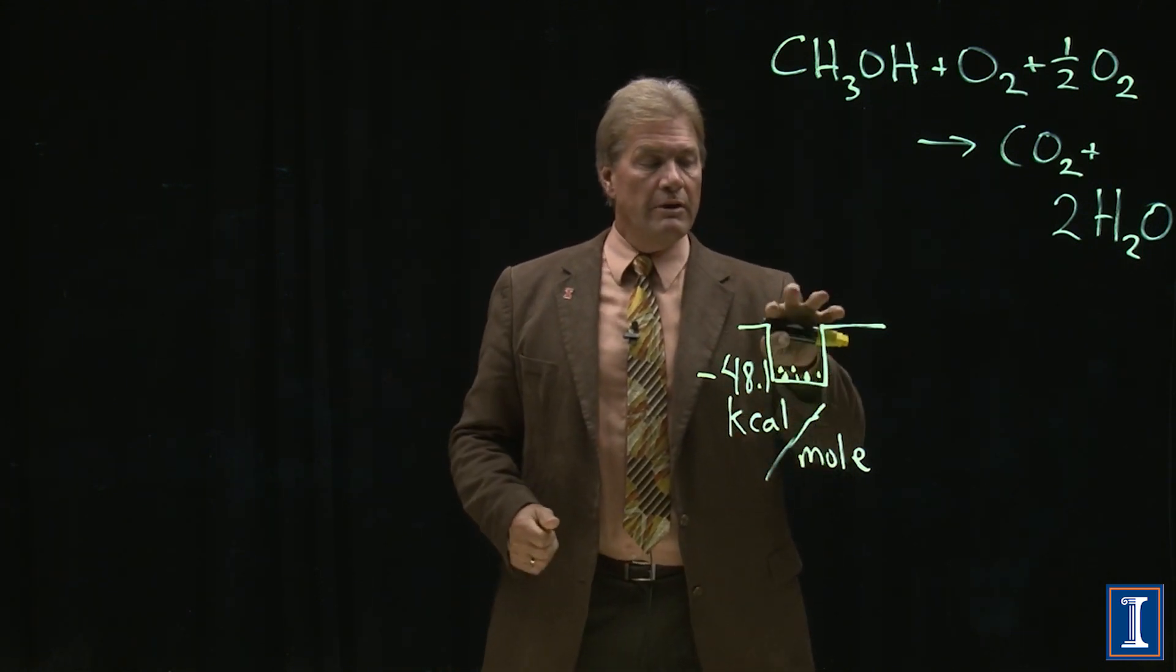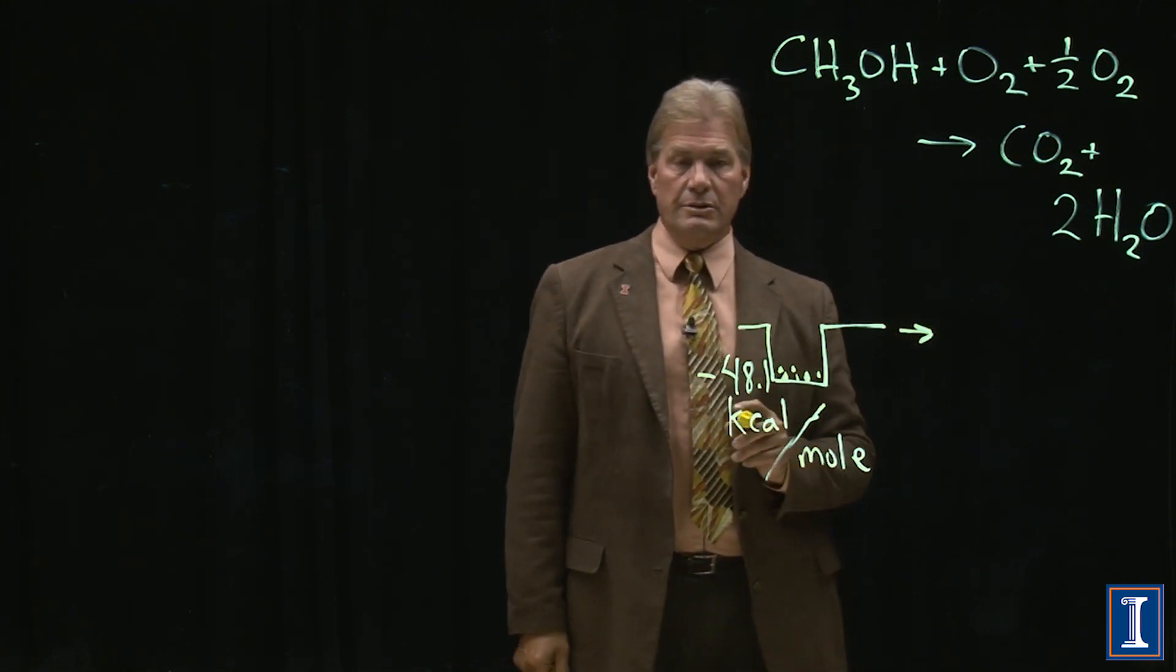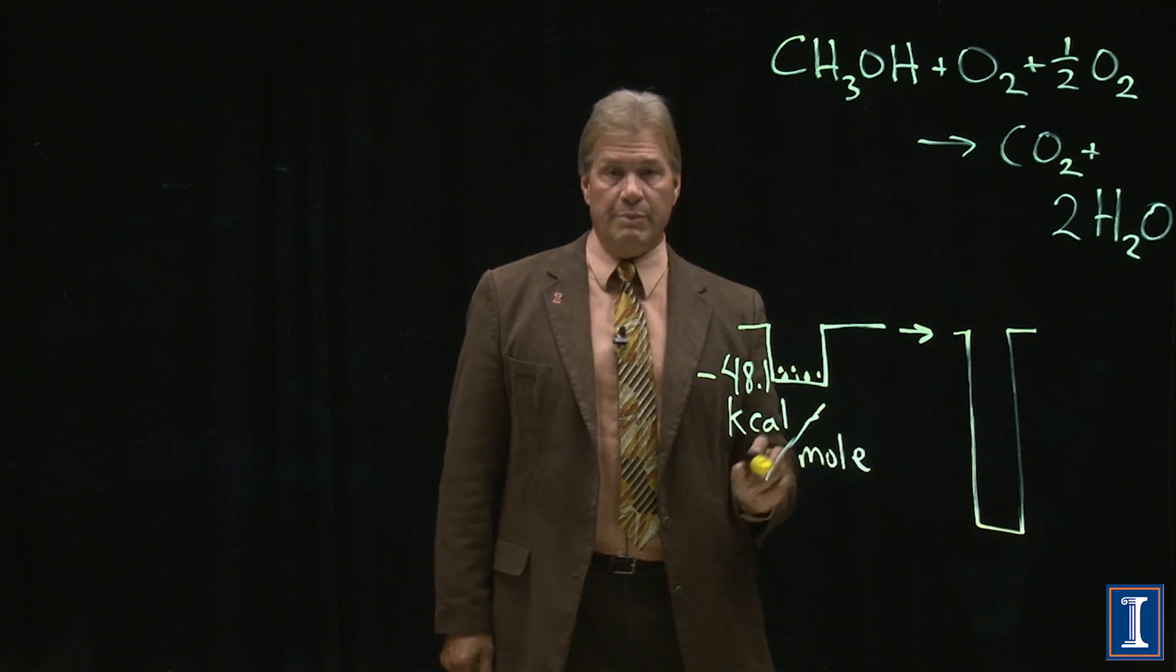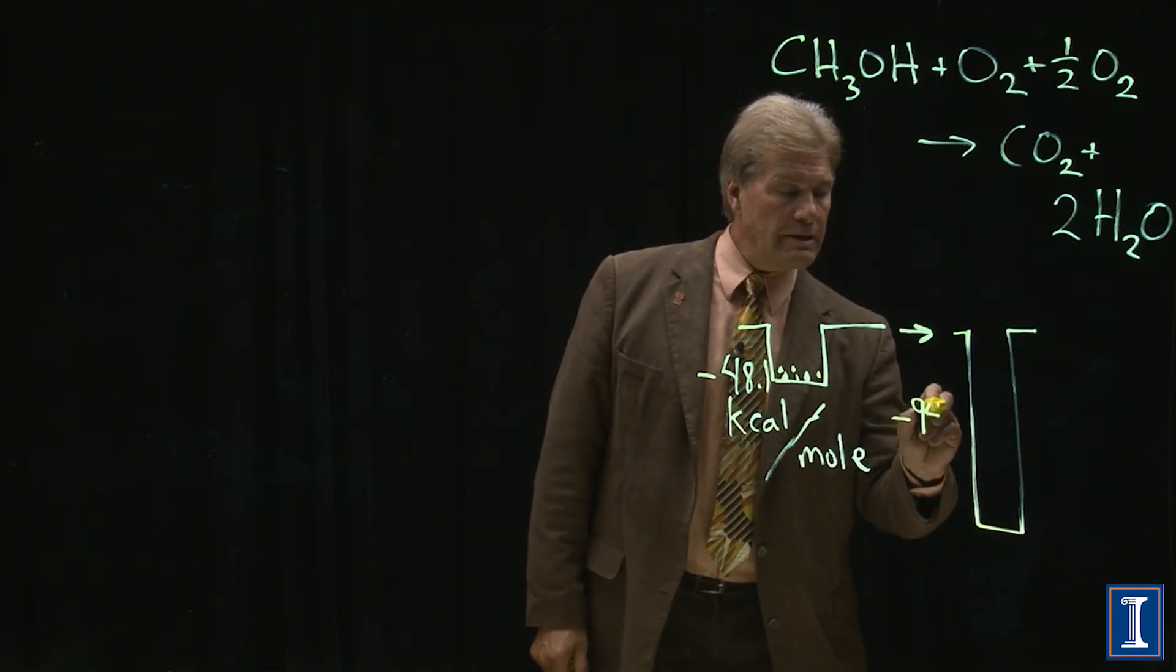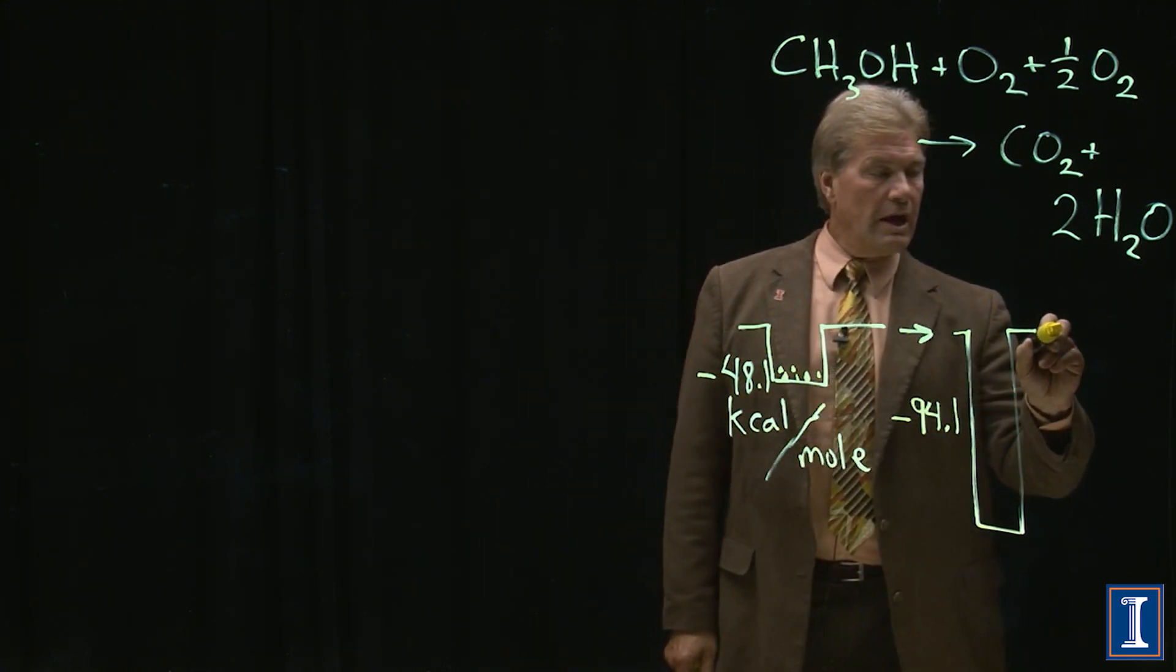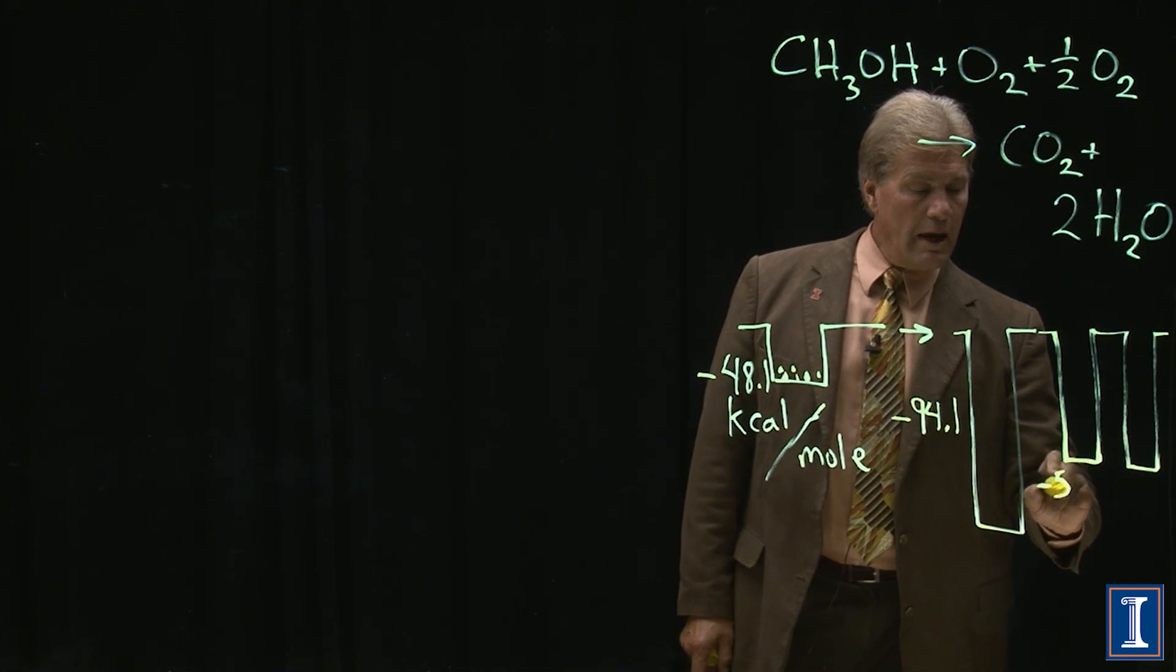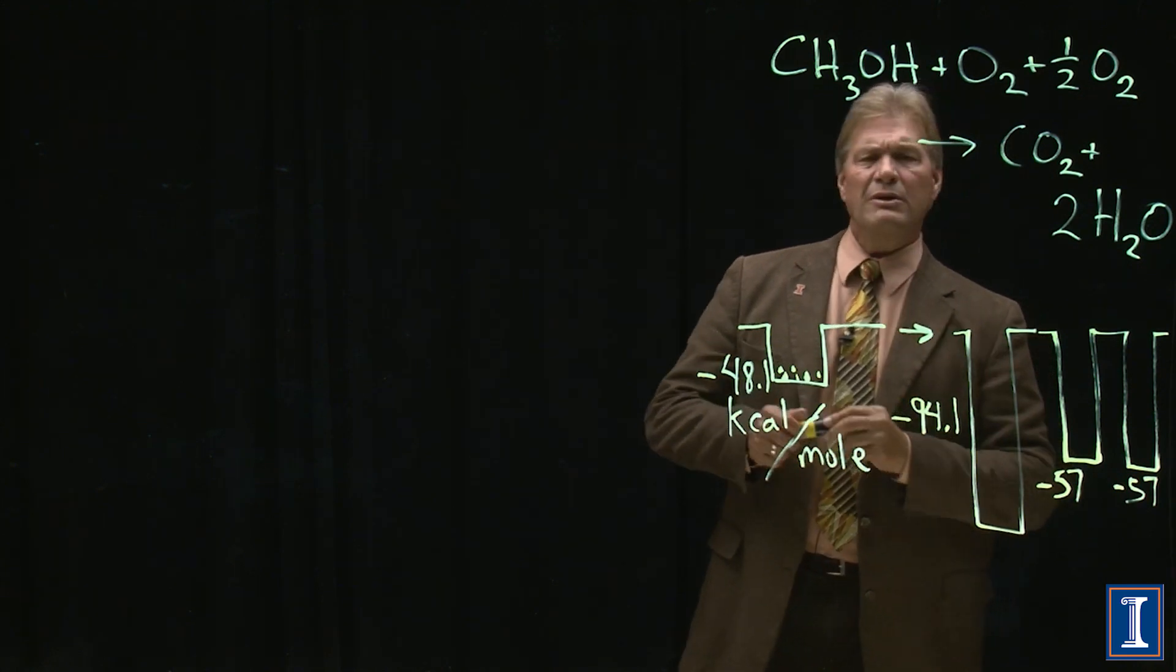And what do I break it up and put it back into? Well, I'm going to put it into a carbon dioxide. And a carbon dioxide is more tightly bound. The well is bigger. It's minus 94.1. And I'm going to have two water molecules. And each of them is also tightly bound at minus 57.